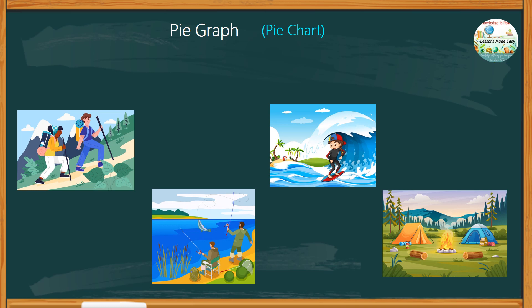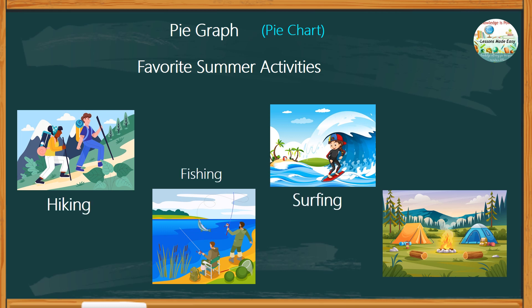Let's create a pie graph or a pie chart based on this information about the students' favorite summer activities, such as hiking, fishing, surfing, and camping. Suppose 5 students liked hiking, 3 students for fishing, 2 for surfing, and 10 students preferred camping. How do we create a pie chart for this?